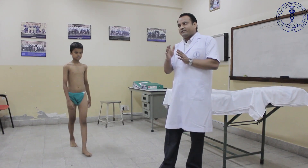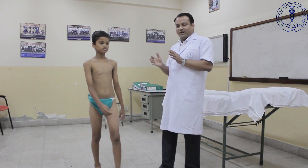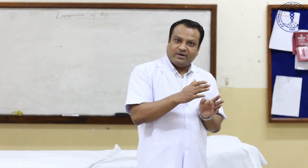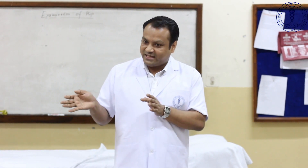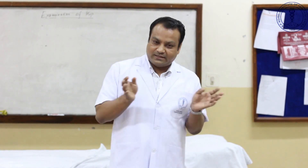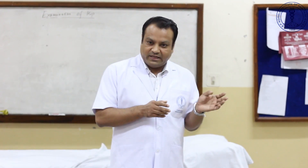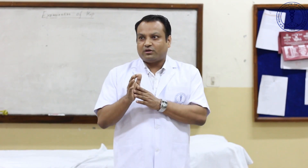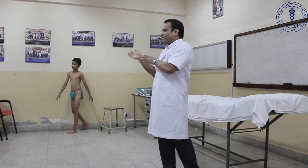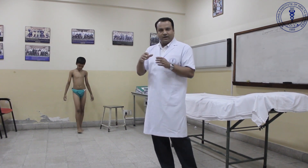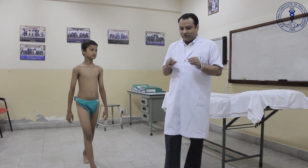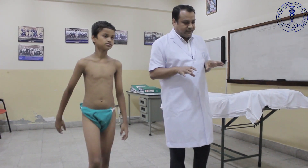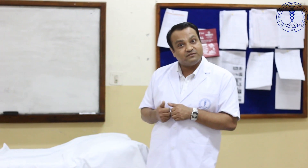You have to observe the deviation of the trunk towards one side — on the side of the stance limb — and the deviation of the trunk to the same side or opposite side of the stance phase limb. This is broadly the assessment of walking, which is one of the important functions for the hip.